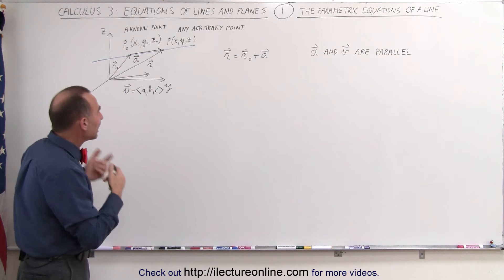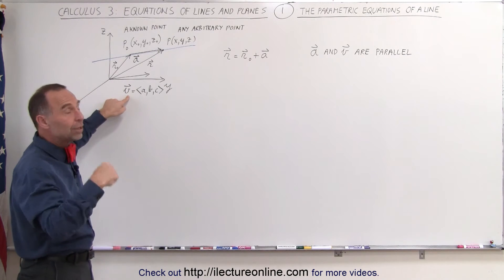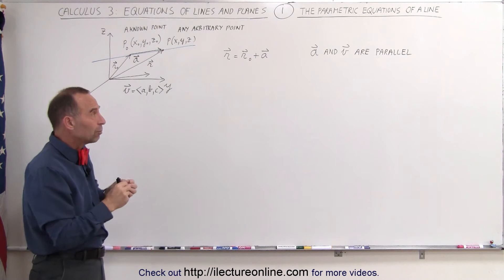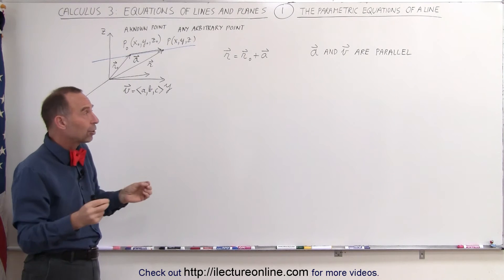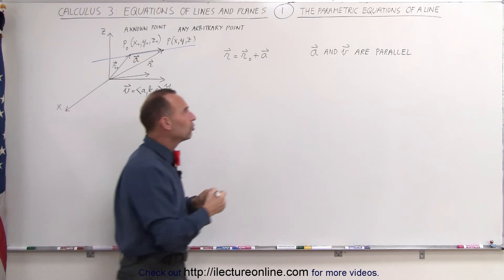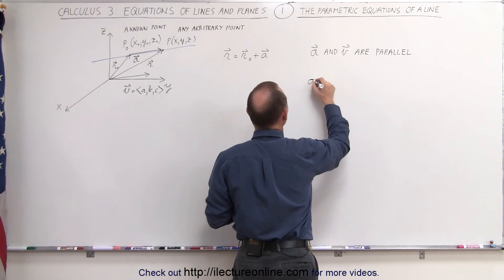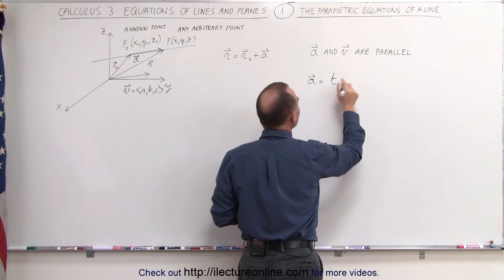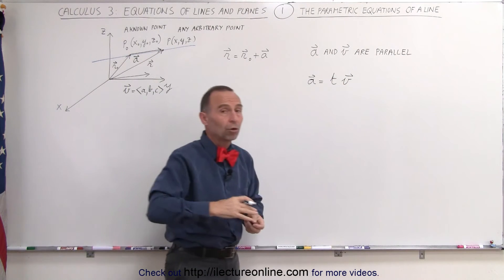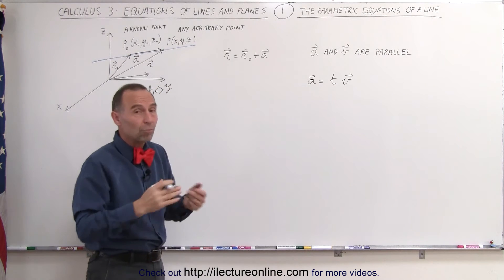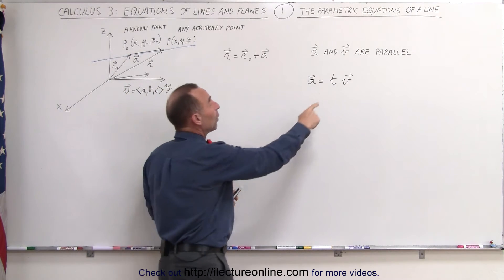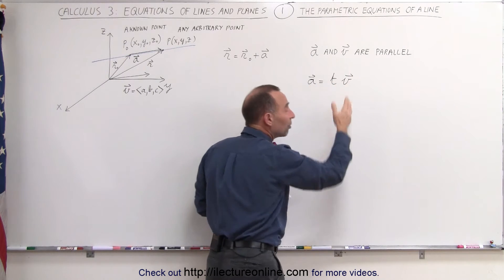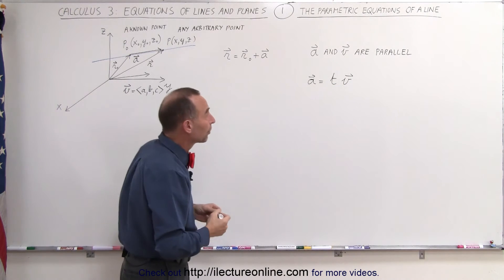Now we can relate the a vector to the v vector. The v vector should be a known vector. The a vector is pointing in the same direction, but can have a larger or smaller magnitude, which means we can write the a vector as the product of some constant — let's call it t — times the v vector. T can be a number larger than one or smaller than one. If it's larger than one, then a is bigger than v. If it's smaller than one, then a is smaller than v, at least in magnitude.